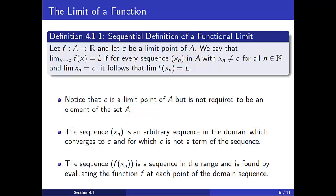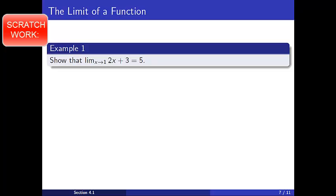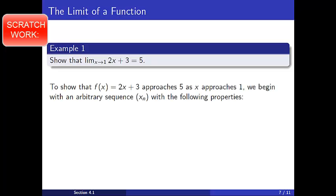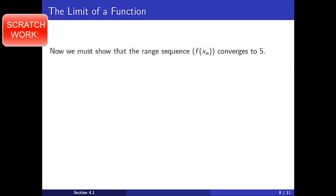We will now move on to examples of how to prove a function has a particular limit. In the first example, we will show that the limit of the function f of x equals 2x plus 3, as x approaches 1, is in fact 5. We will first outline the ideas needed for the proof, and then provide a formal proof. First, we will pick an arbitrary sequence x sub n with the properties: one, each term in the sequence is in R since R is the natural domain of f; two, no term in the sequence is 1; and three, the sequence x sub n converges to 1. Next, we want to consider the range sequence f of x sub n and show it converges to 5.